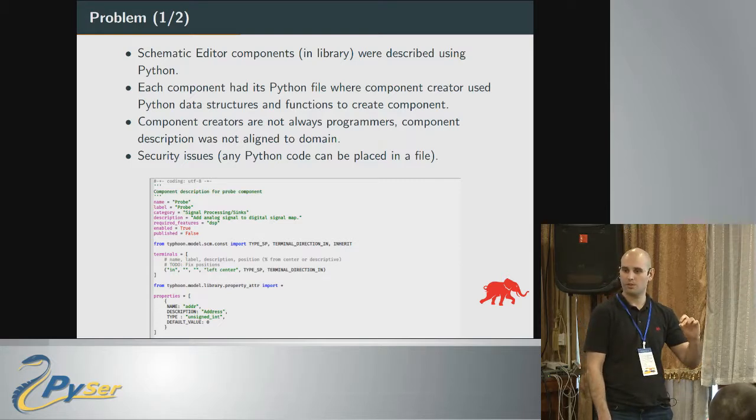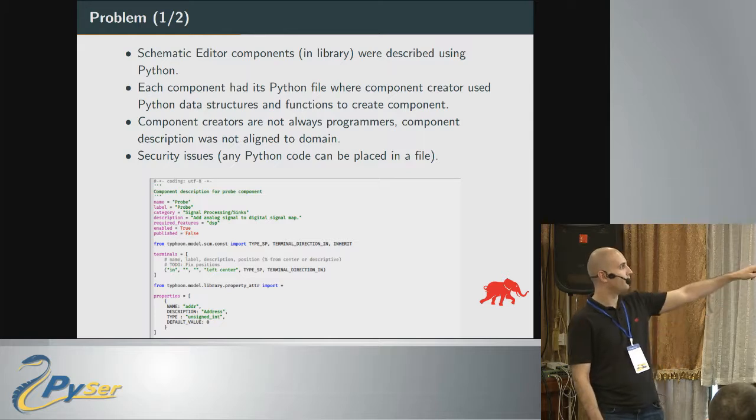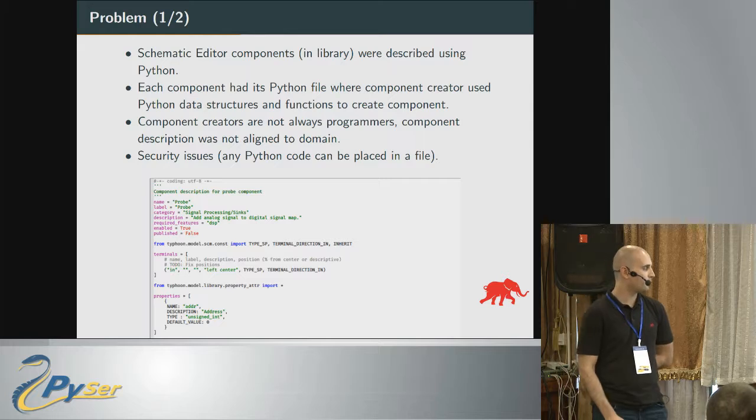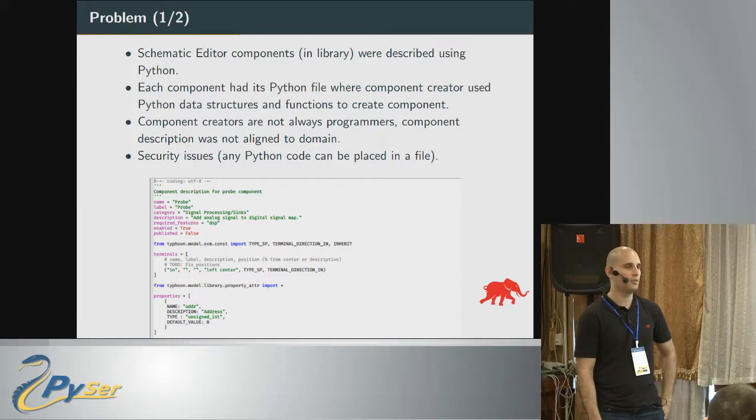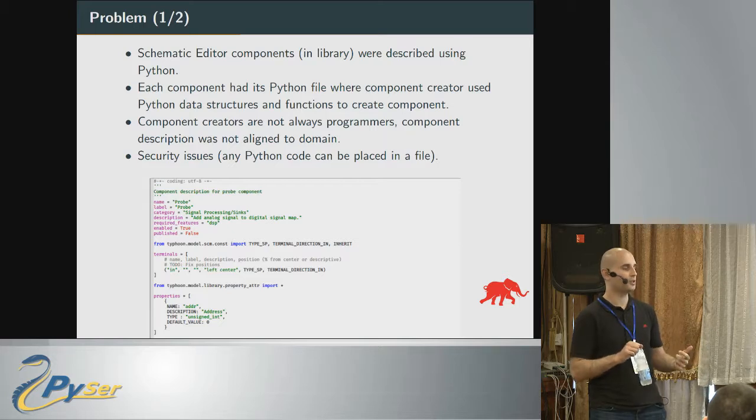This approach was problematic because, first, users don't know Python — we are the programmers, users are not. The second problem was security: you can place any code in these component description files. For example, I create a component, package it, someone else builds a library, and there is a crash or some break of the system. This is actually called an internal DSL — when you use the same language in which you are programming, or a subset of it, to define your custom DSL.